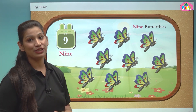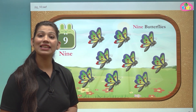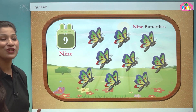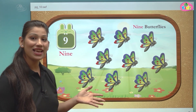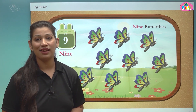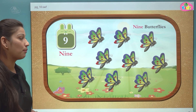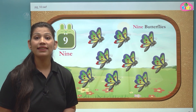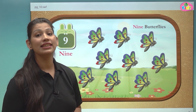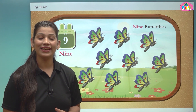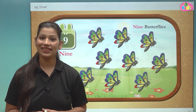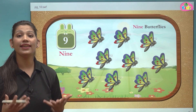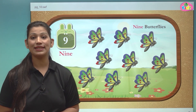There are 9 butterflies in this garden. In this garden we can see beautiful butterflies which are 9 in number. We write 9 as N-I-N-E. Nine ka naam jo hota hai woh N-I-N-E se hota hai.